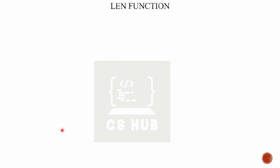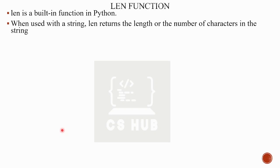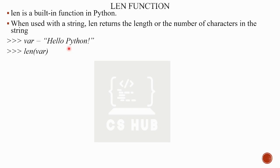The len() function is used to find the string length. When used with a string, len() returns the length or number of characters in the string. For example, where is equal to 'hello python'. Counting: h-e-l-l-o is 5, space is 6, p-y-t-h-o-n gives us characters 7 through 12. Including the space, the total length is 13.